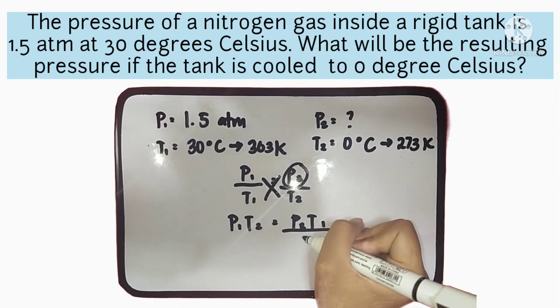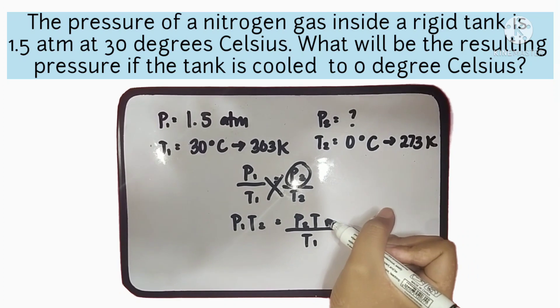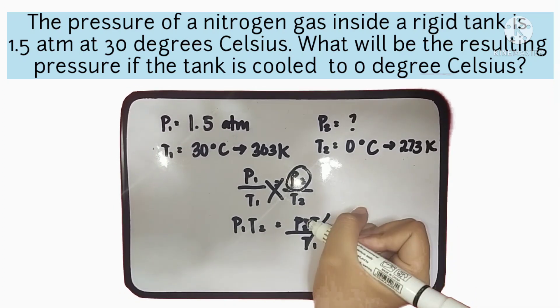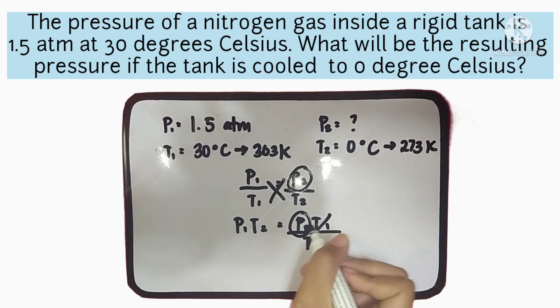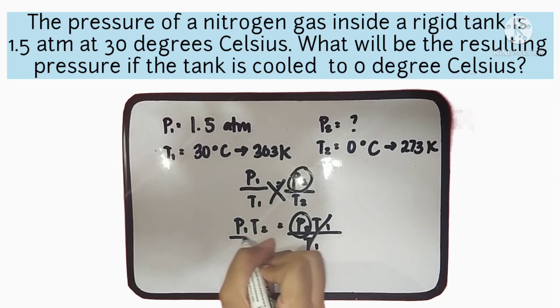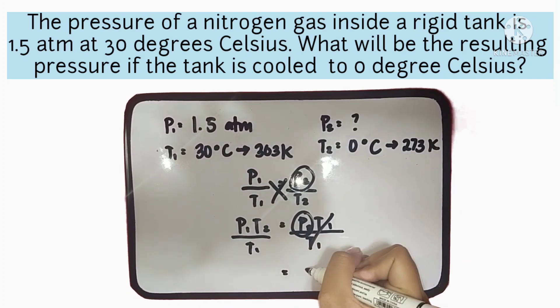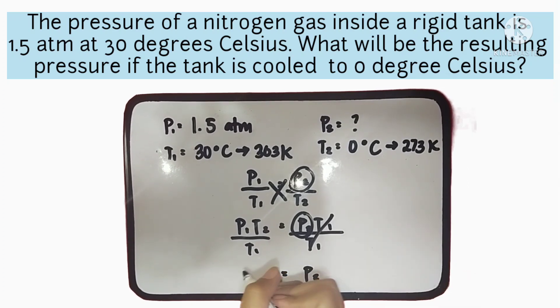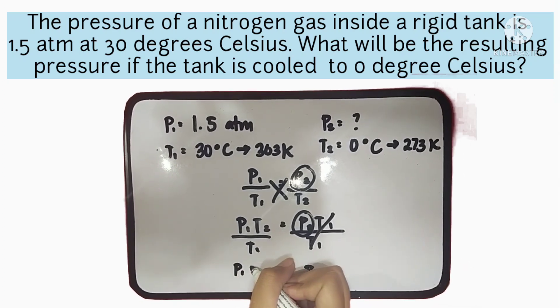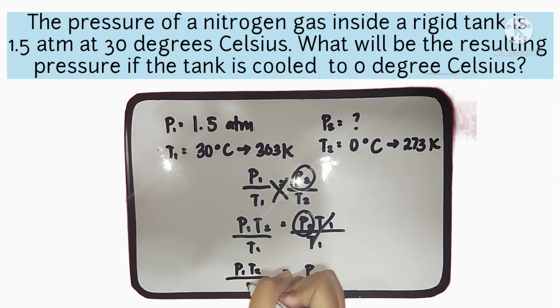Then, divide both sides by T1, so that T1 will be cancelled and P2 will remain on one side. So, our final formula will be P2 is equal to P1 times T2 over T1.